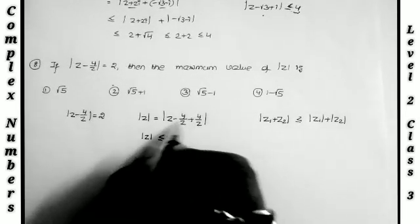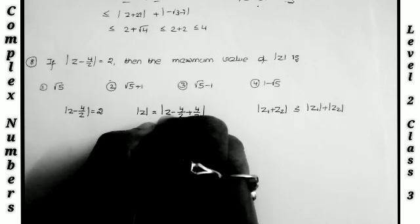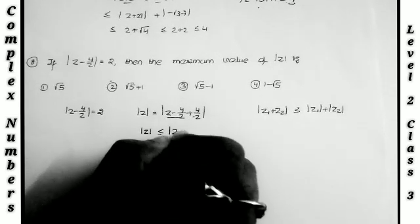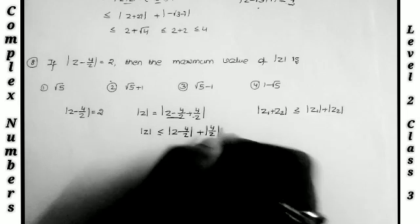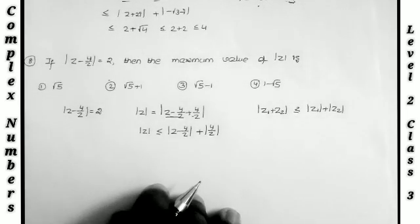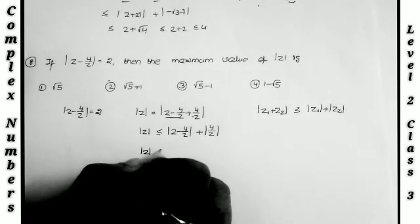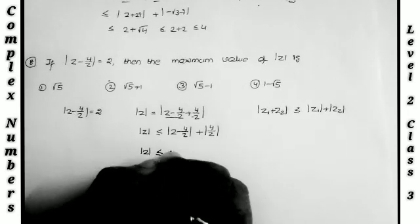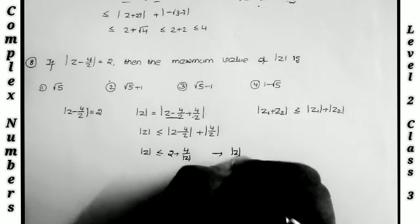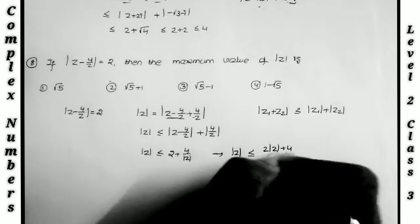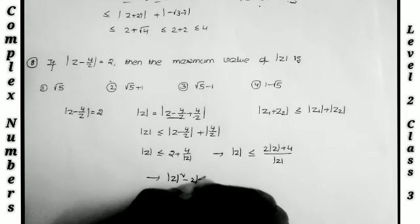This is in the form |z1 + z2| ≤ |z1| + |z2|, so |z| ≤ |z - 4/z| + |4/z|. Since |z - 4/z| = 2, we get |z| ≤ 2 + 4/|z|. Taking the LCM: |z| ≤ (2|z| + 4)/|z|, and cross-multiplying gives |z|² - 2|z| ≤ 4.